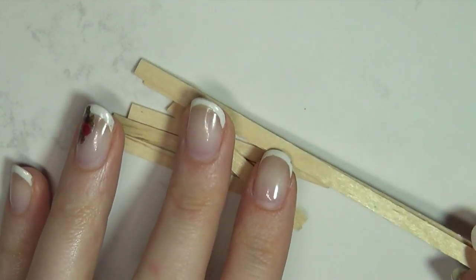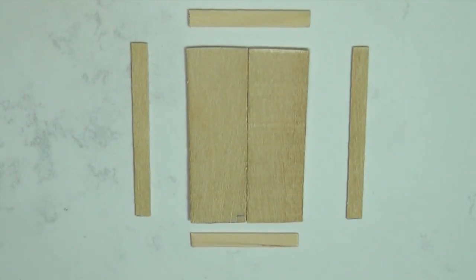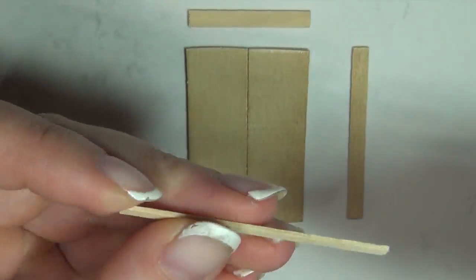For the sides I'm using these thinner stirring sticks. Cut them to size and glue them on. We're basically making an open box.